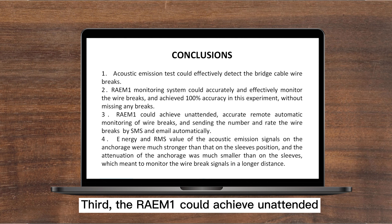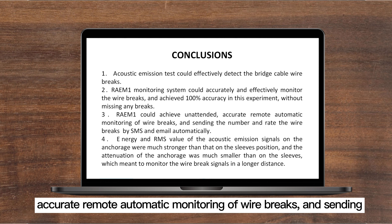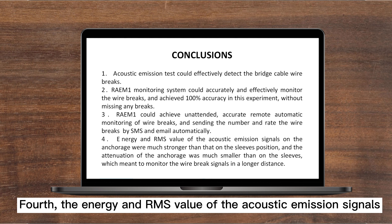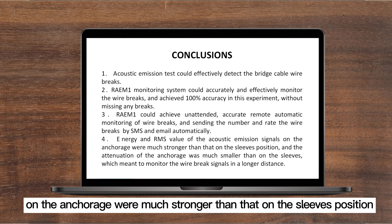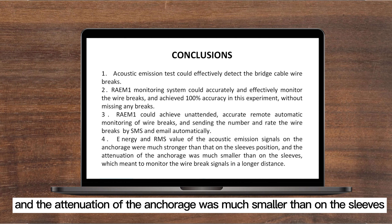Third, the RAEM-1 could achieve unattended, accurate, remote automatic monitoring of wire breaks, sending the number and rate of wire breaks by SMS and email automatically. Fourth, the energy and RMS value of the acoustic emission signals at the anchorage were much stronger than at the sleeves position, and the attenuation at the anchorage was much smaller than at the sleeves, meaning wire break signals could be monitored over a longer distance.